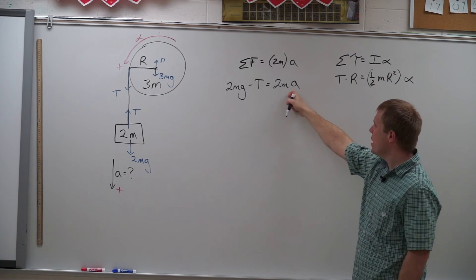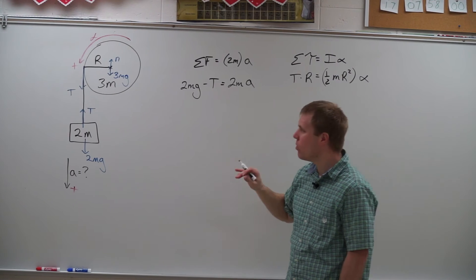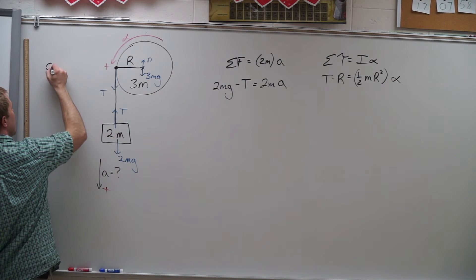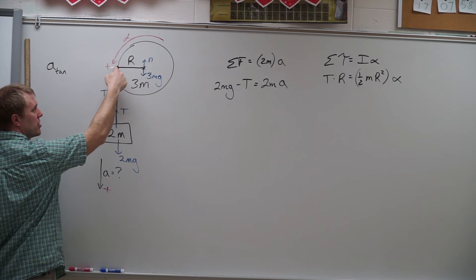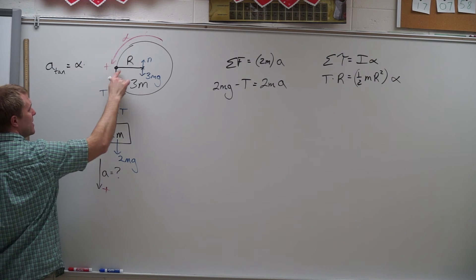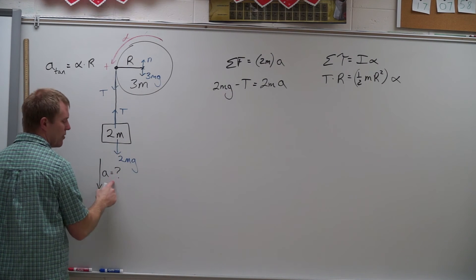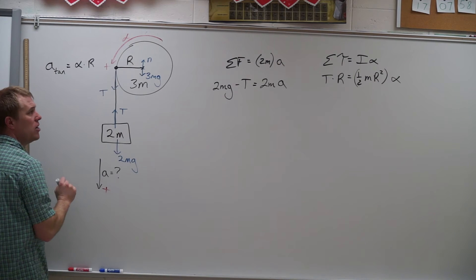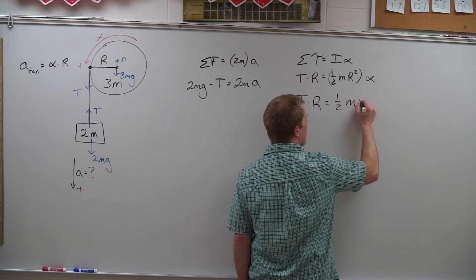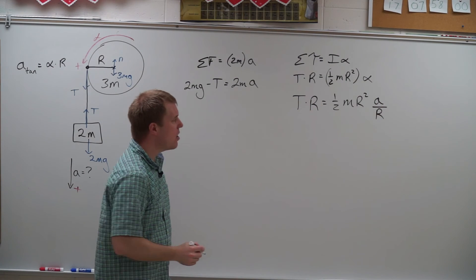This equation has a, and this equation has alpha. There is a relationship between the linear and rotational quantities: because they're connected at this point, the tangential acceleration — the acceleration of this point tangent to the circle — equals alpha times the distance from the axis of rotation to that point, r. The tangential acceleration is the acceleration of the string and thus the block. So substituting, I end up with T times r equals one-half mr squared times a over r, and all of those r's cancel.